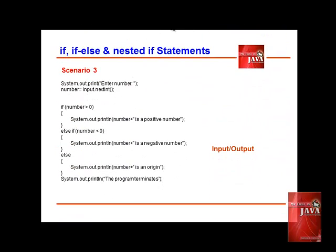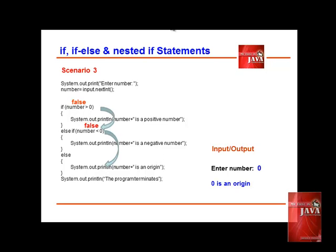Scenario three: we prompt again to enter a number. We enter zero. The program accepts zero and stores it in the number variable. We validate the condition: if number is greater than zero — this is false. It will jump to the next else-if statement and test if number is less than zero — the answer again is false. It will jump to the last else statement and display 'number is an origin.' After that, it will jump to the last line: 'the program terminates.'